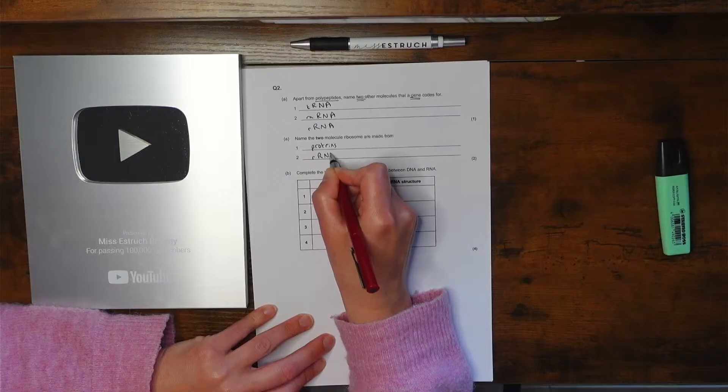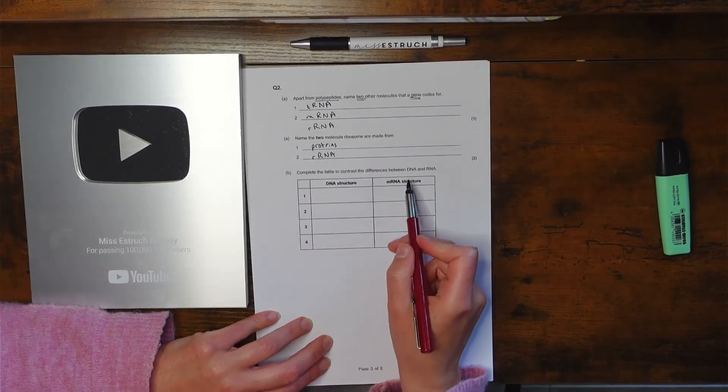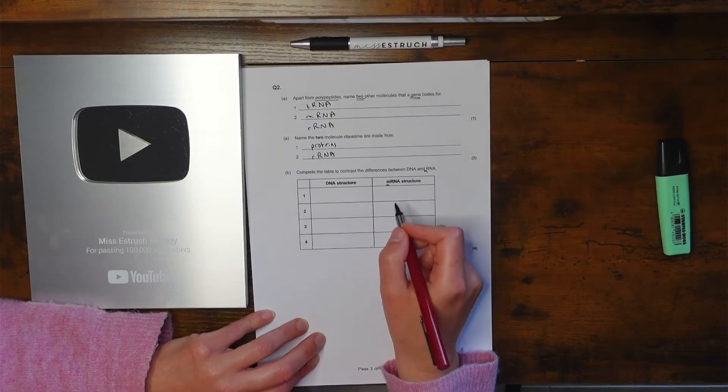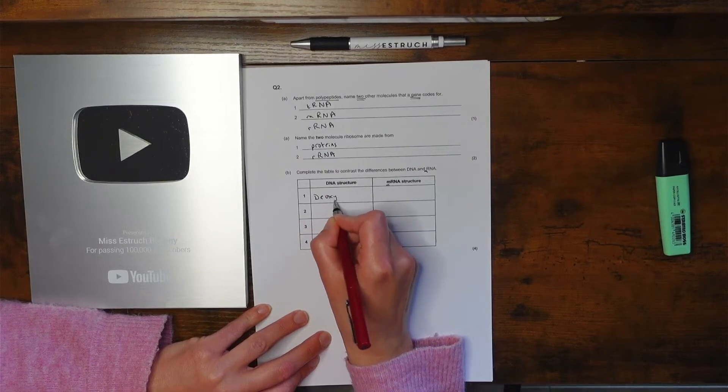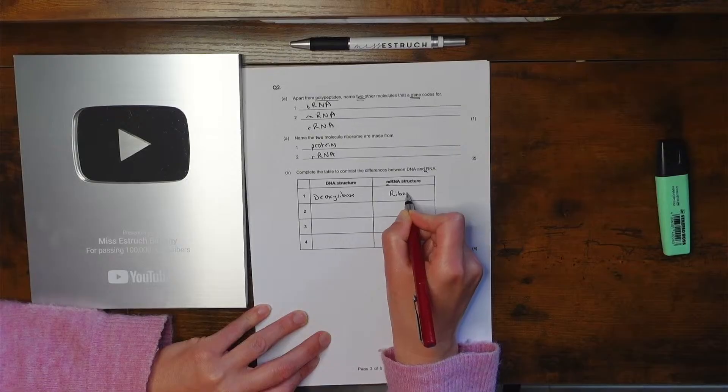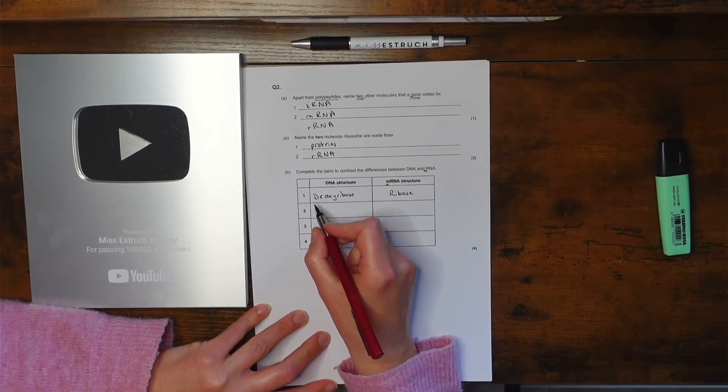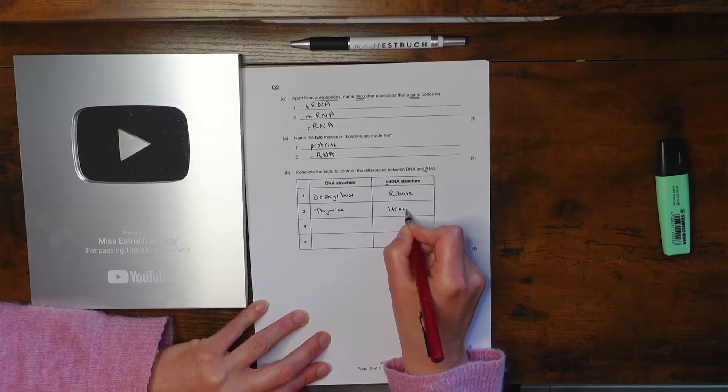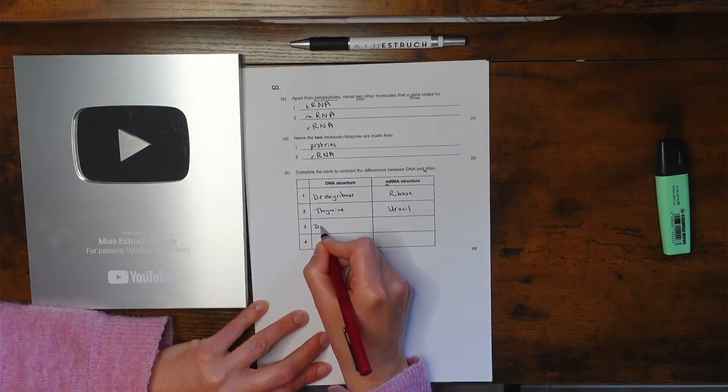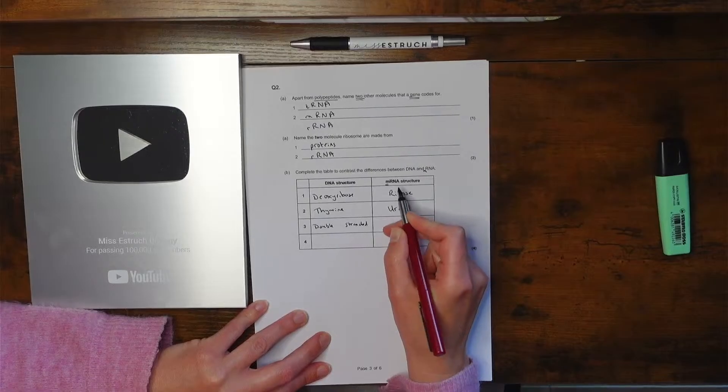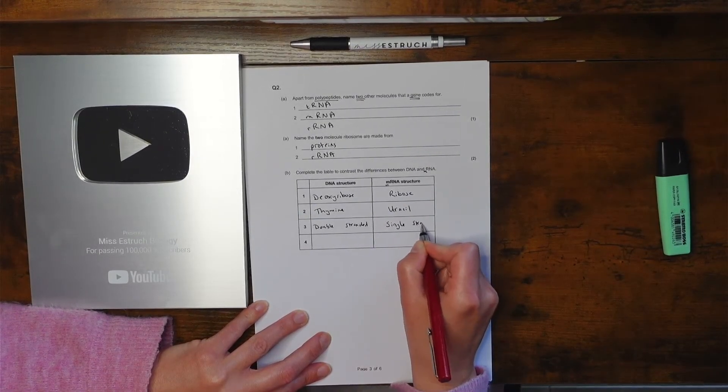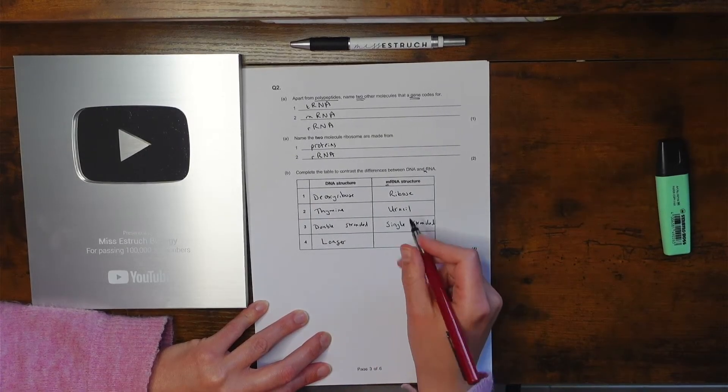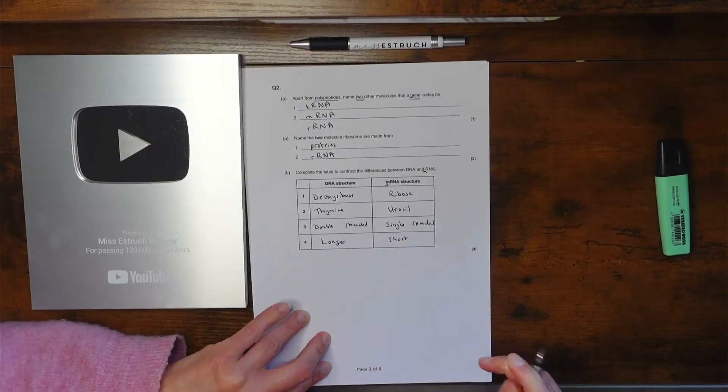And complete the table to contrast differences between DNA and that says RNA but here it says M, so mRNA, so specifically against mRNA. So I'm gonna have deoxyribose versus ribose as the pentose sugar. Next then it's going to be, let's have thymine as one of those nitrogenous bases versus uracil in mRNA. DNA is double stranded whereas mRNA is single stranded. And I'm going to go for the fact that DNA is longer because it's all of your genome, whereas mRNA is shorter because it's only a copy of a single gene.